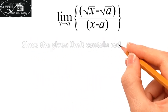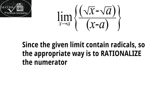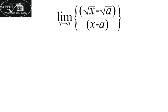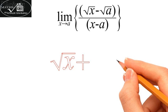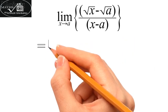Since the given limit contains radicals, the appropriate way is to rationalize the numerator. So multiplying and dividing by √x + √a will rationalize the numerator.